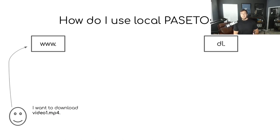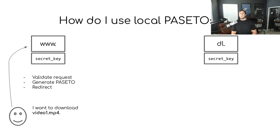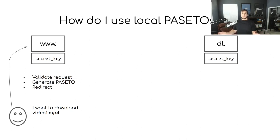This might be one way to architect this application using local PASETOs. A user has paid for a video and wants to download video1.mp4. When they make the request to the web server, the web server validates the request — it confirms the user is logged in, has permissions to download this video, and has already purchased it. Then the local web server generates a PASETO and redirects the user to the download service. Before we can move on, we need to understand that both servers need to have the same secret key, since local PASETOs require the same secret key to both create and decrypt.